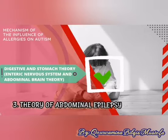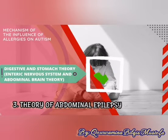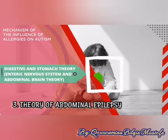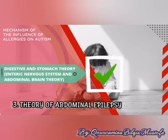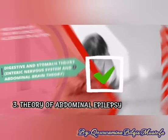Theory 3 — Theory of Abdominal Epilepsy. The enteric nervous brain theory may also explain the occurrence of abdominal epilepsy, namely digestive disorders, especially abdominal pain, which can cause epileptic seizures or seizures in children and adults. Several scientific reports state that indigestion or recurrent abdominal pain in sufferers is associated with the incidence of epilepsy.